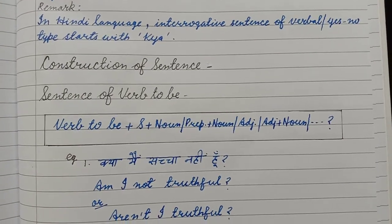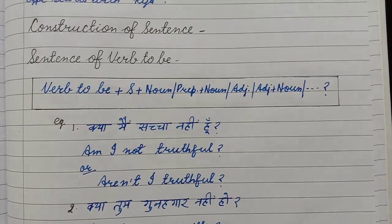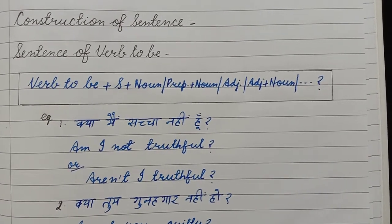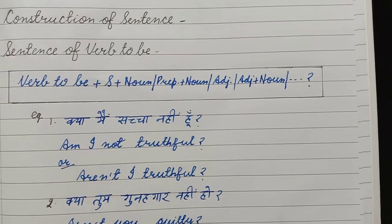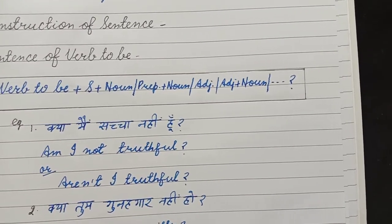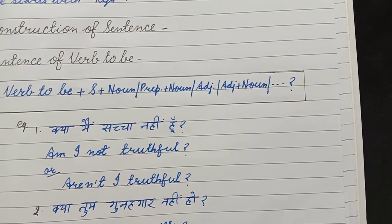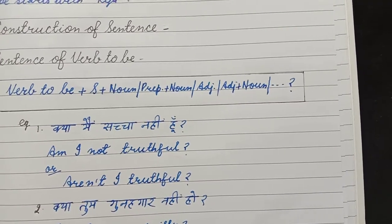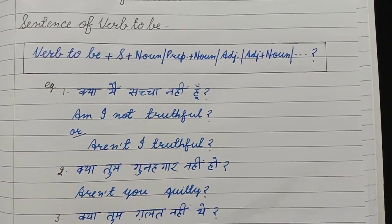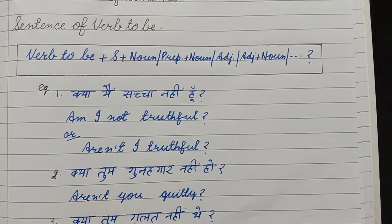Construction of sentence: firstly, for a sentence of verb to be — verb to be, then subject, then noun / preposition + noun / adjective / adjective + noun. Further you can add adverb + adjective, or adverb + adjective + noun, then question mark. Example: क्या मैं सच्चा नहीं हूँ? — Am I not truthful?